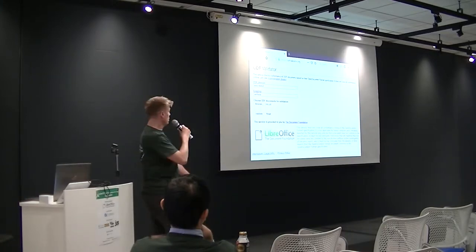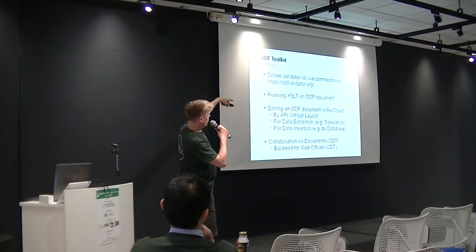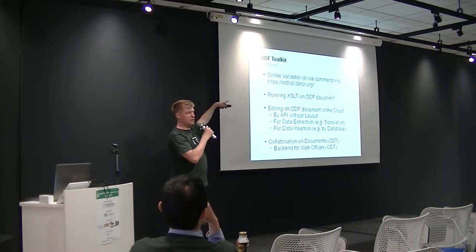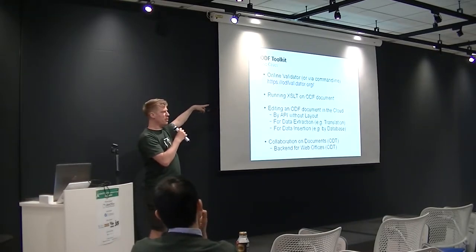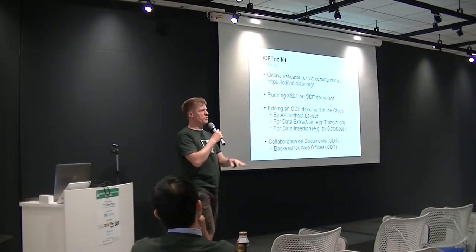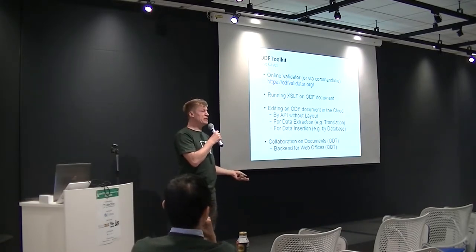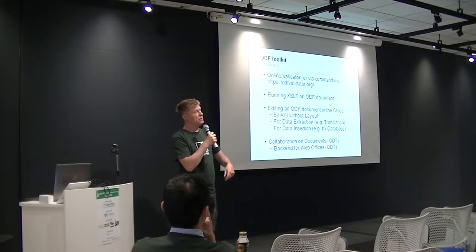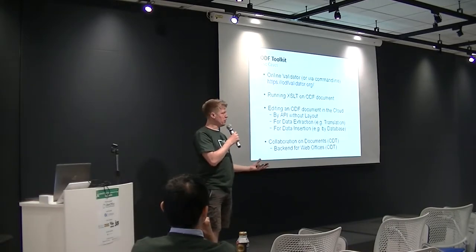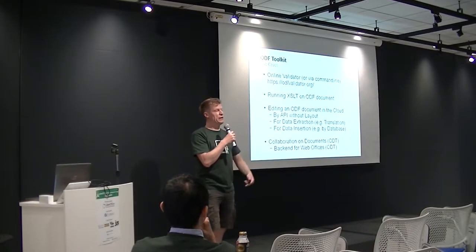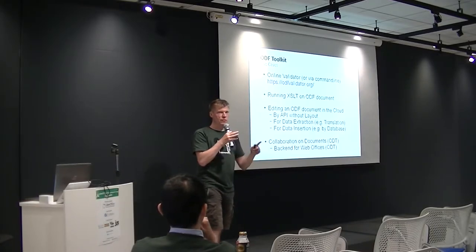What other tools exist in the ODF Toolkit? There's the online validator, and another tool is an XSLT runner. If you use XSLT, you transfer one XML to another using scripts, but the XML is inside the document zip. This tool lets you give the ODF document — ODT, ODP, or whatever — directly to the transformation without needing to unpack it first. It's a simple, narrow use case.